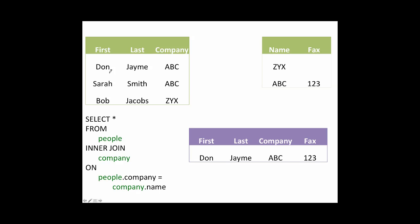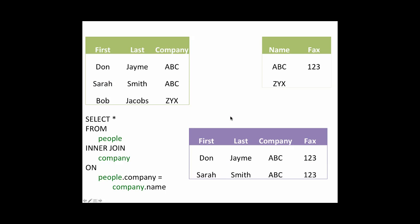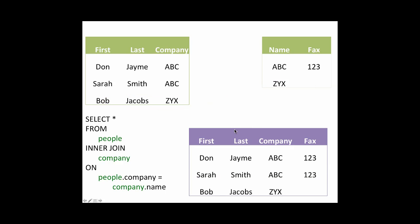Now that we've done Don, we go to Sarah. The computer asks: is ABC equal to ZYX? No. Is ABC equal to ABC? Yes — so it takes those rows and adds them to our results. Lastly, we go to Bob and ask: is his company equal to ABC? No. Is it equal to ZYX? Yes. So we take those two rows, join them together, and add them to our results. And now we have the answer. This is a simple example where every person matches exactly one company.